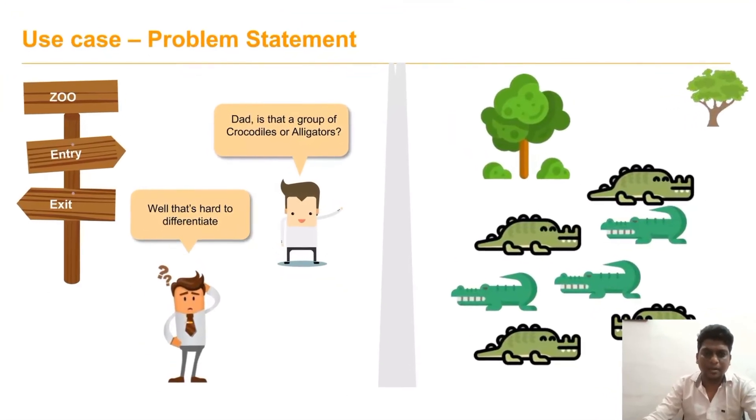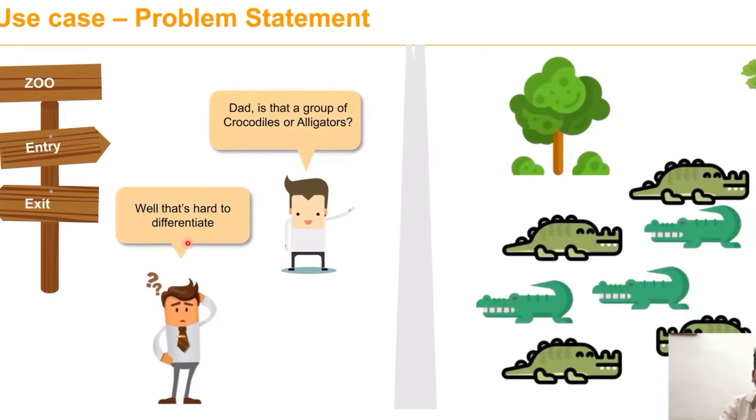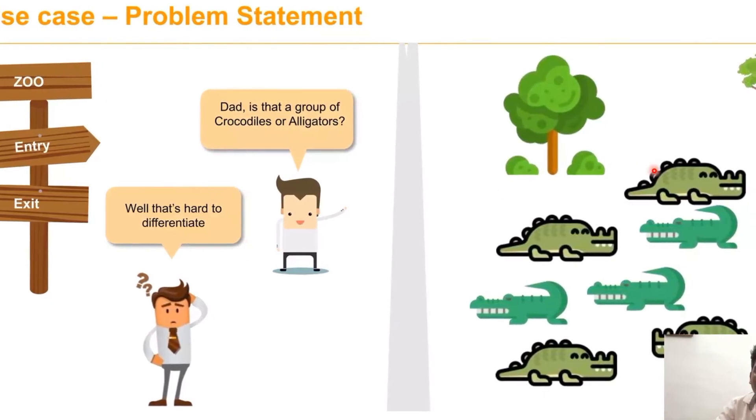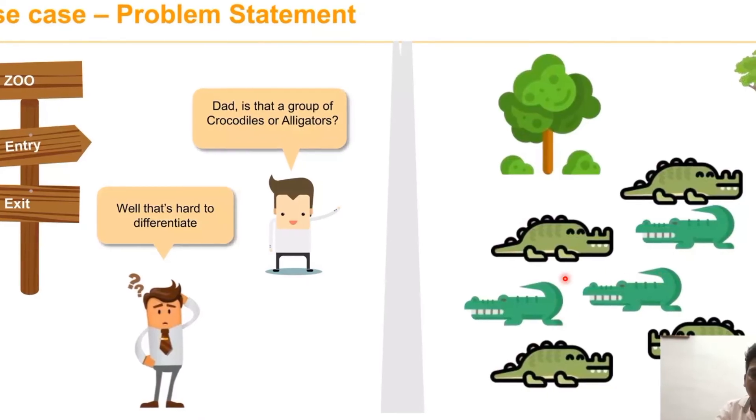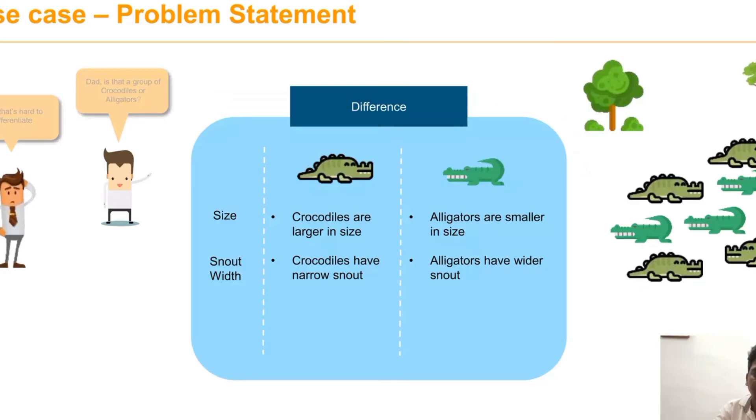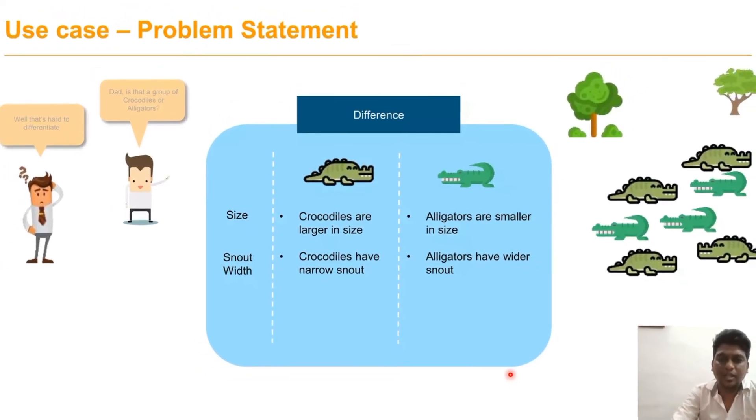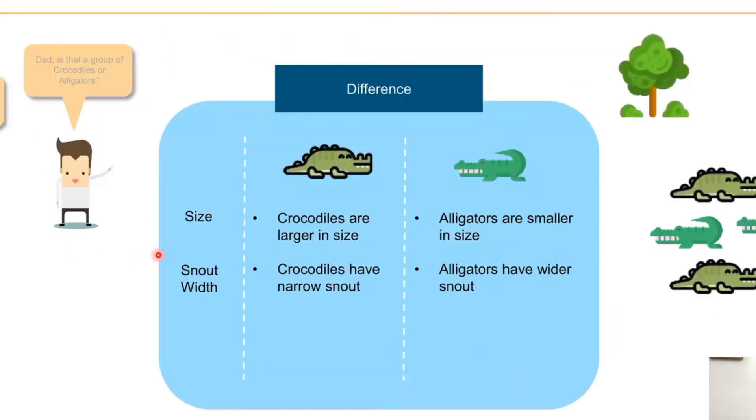Let's consider an example. A boy went to a zoo with his father. There are a group of alligators and crocodiles, but it is difficult for that boy to segregate which one is the alligator and which one is the crocodile. Here, what is the main difference? Regarding size, compared to the alligator, crocodile size is very huge. But in case of snout width—the snout width is narrow in case of crocodile but very wide in case of alligator.